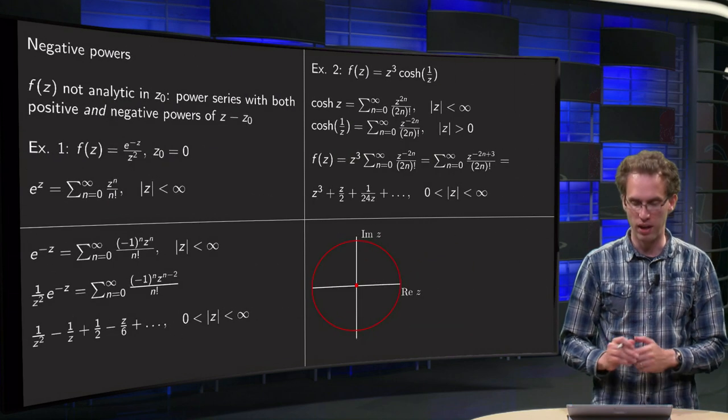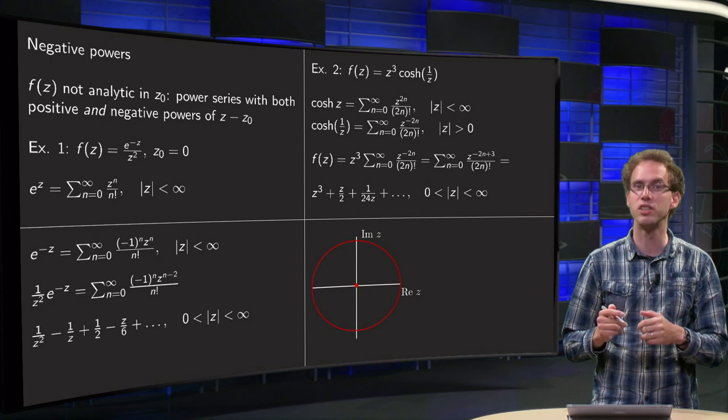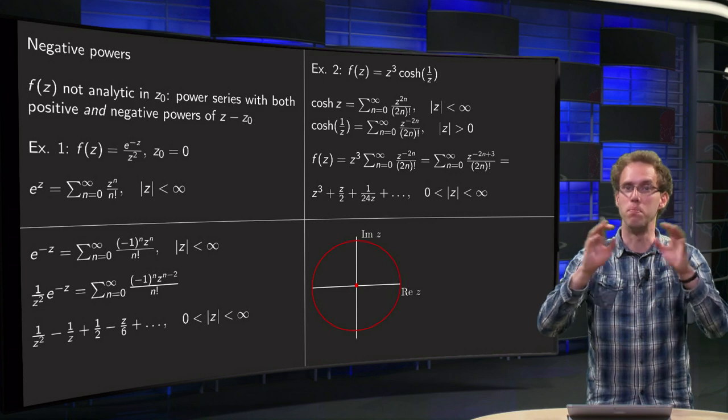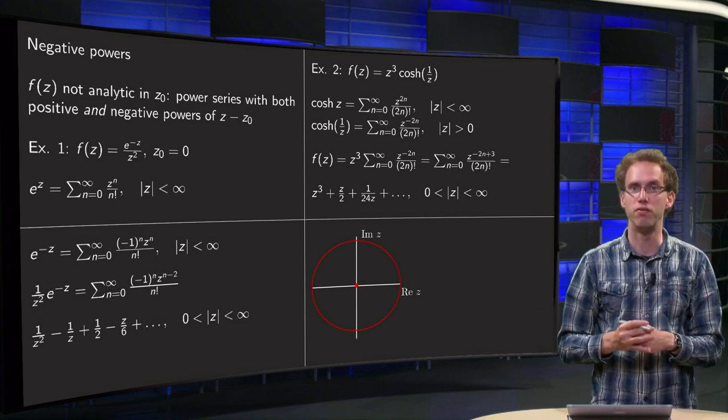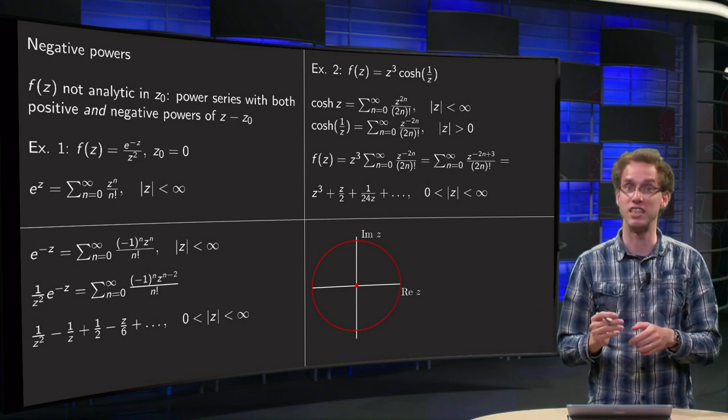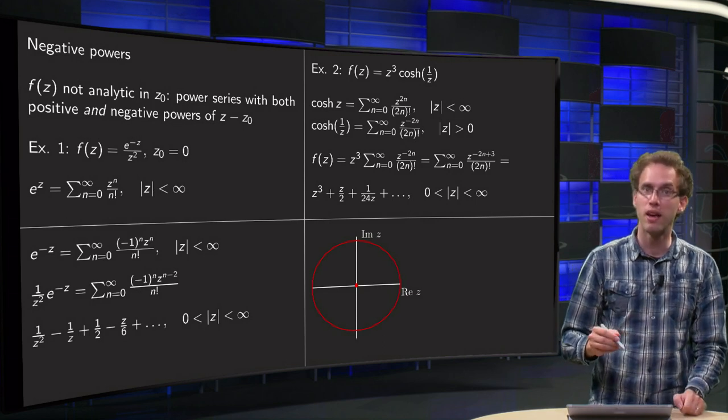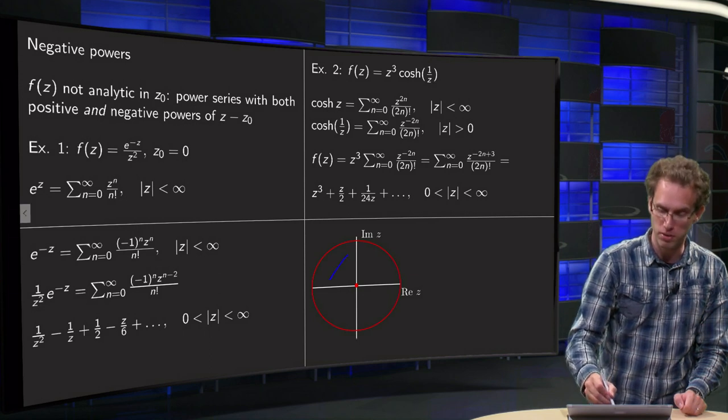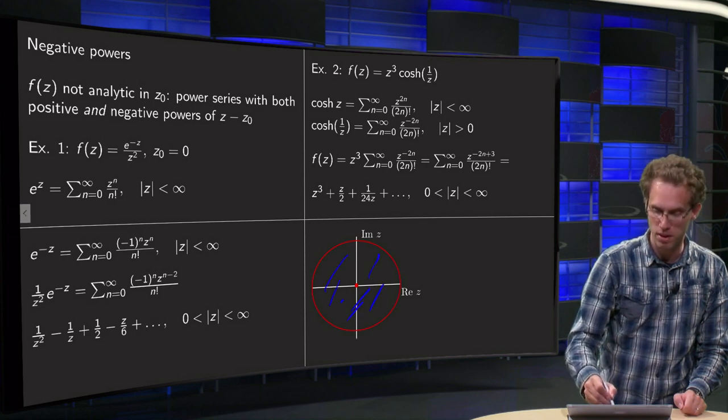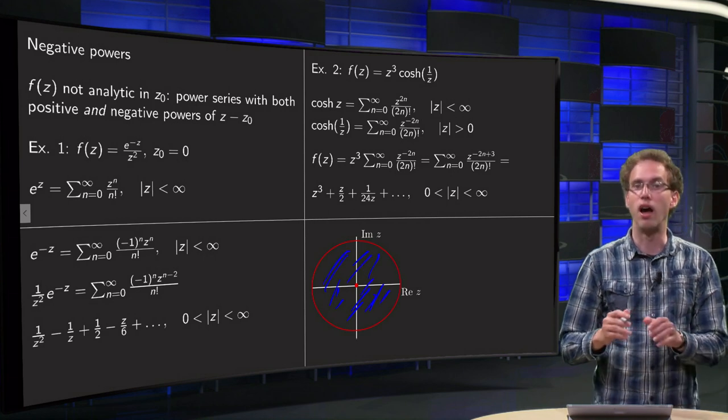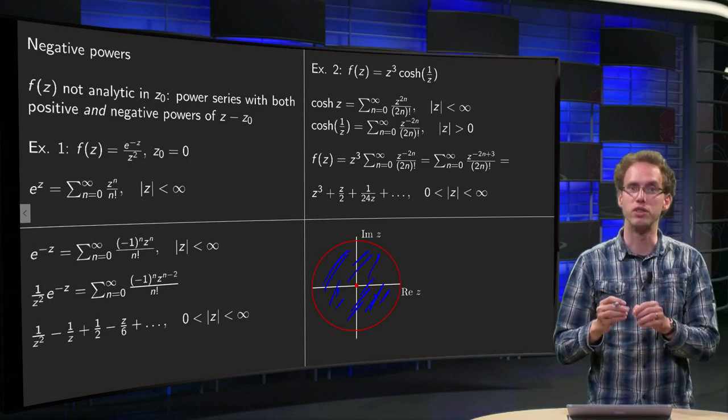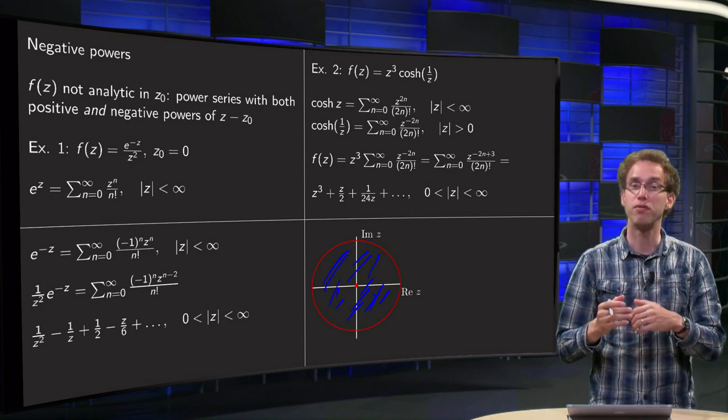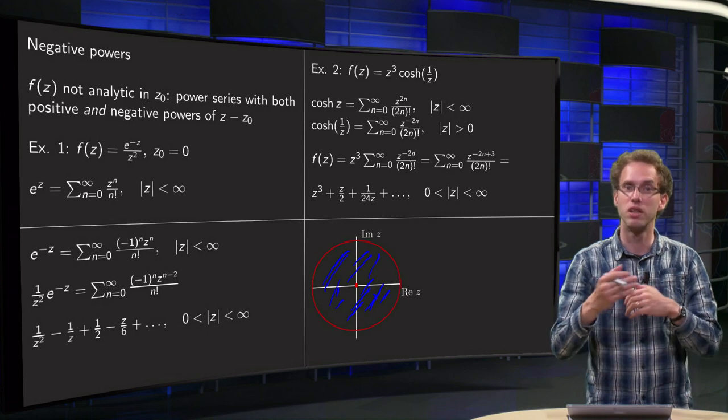And you can see in the figure why this is called an annulus. Well I cannot make a circle of radius infinity of course, so I just made a big circle in the figure. I cannot make a circle with radius zero, so I just made a small circle in the video. And now you see that your power series is converging in between. So your power series is converging not inside a full circle but inside some donut-like region.